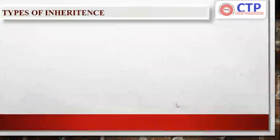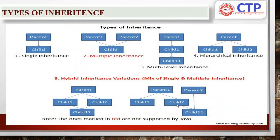What are the types of inheritance? We have single inheritance, multiple inheritance, multi-level, hierarchical, and hybrid inheritance. Single: one parent, one child. Multiple inheritance: a single child can have more than one parent. Multi-level inheritance: it is a multi-level of single inheritance, where each child can have at most one parent and each parent can have at most one child. Hierarchical inheritance: a single parent can have multiple children. Note the difference between multiple and hierarchical — in multiple inheritance, a single child can have multiple parents, but in hierarchical inheritance, a single parent can have multiple children. Hybrid inheritance is a combination of any two or more types of inheritance.